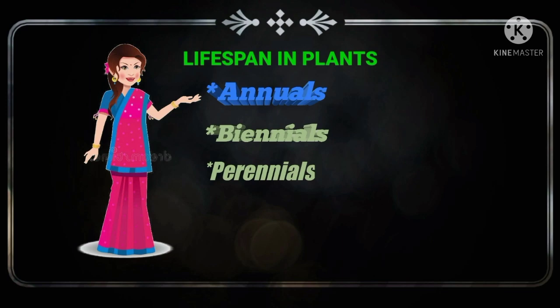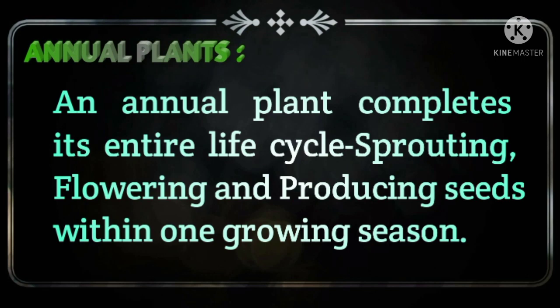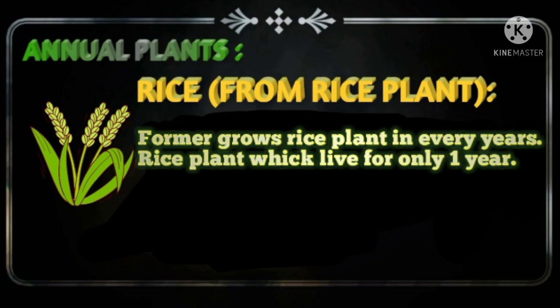First, annual plants. An annual plant completes its entire life cycle — sprouting, flowering, and producing seeds — within one growing season. We all know we get rice from the rice plant. Farmers grow rice plants every year. So, the plants which live only for one year are called annual plants. For example, rice, wheat, corn, etc.